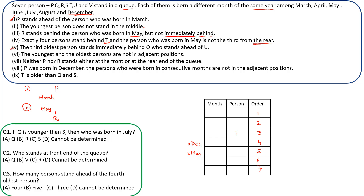The fifth clue says the third oldest person stands immediately behind Q. The oldest is March, second oldest is April, third oldest is May. So the person born in May is immediately behind Q, forming a block: Q then May. Note that May stands ahead of Q, not immediately ahead.